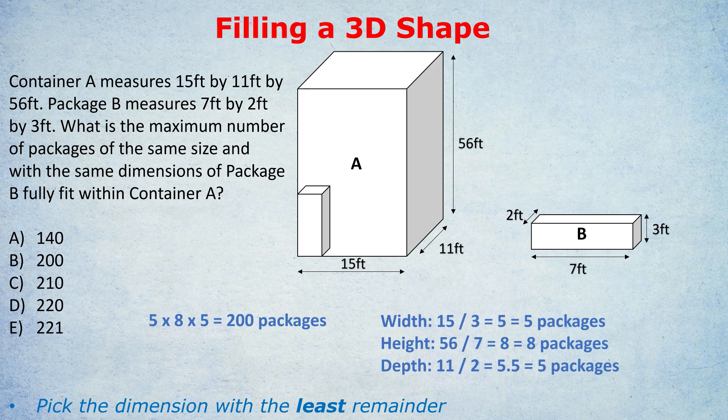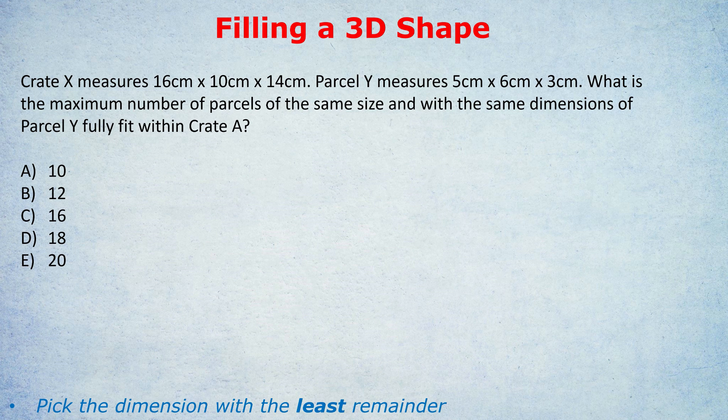But of course, you'd get a much bigger answer if you just got the volume, 15 times 11 times 56, and divided it by the volume of B, 2 times 7 times 3. But as we agreed in the previous question, we can't do that because it's not liquid. Okay, now you can see what I'm talking about. I want you to, if you haven't before, really practice this last question on your own. This time, I'm not even going to give you a diagram to help. And see if you can pick the dimensions that give you the smallest remainders, and therefore the maximum way you can fill that bigger 3D shape. Pause the video and see how you get on.